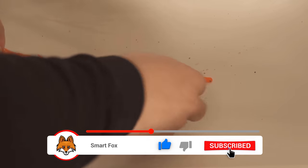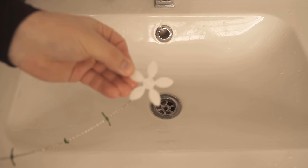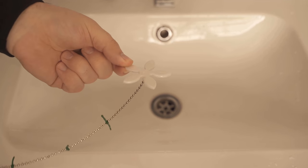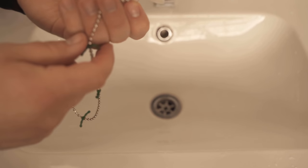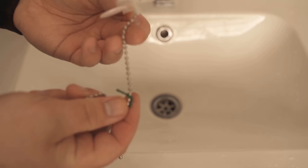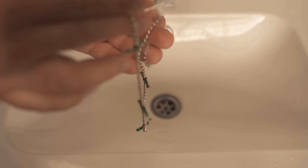I'll link the part below in the video description in case you want to try it yourself. It also comes with a flower like this with a little chain on it, and this is mainly for prevention so that the drain doesn't get blocked in the first place.